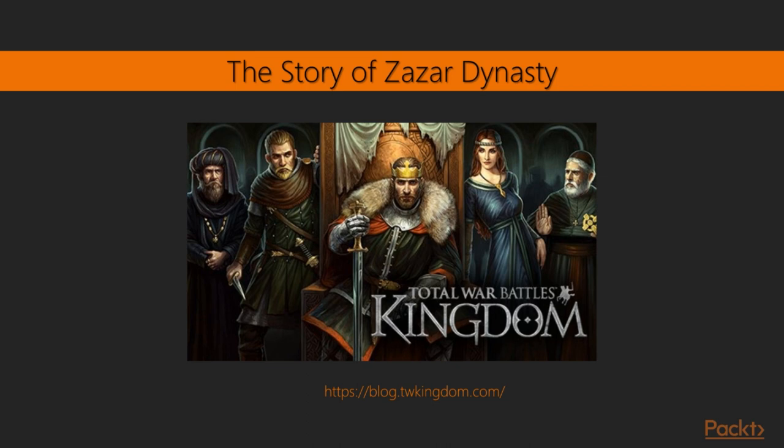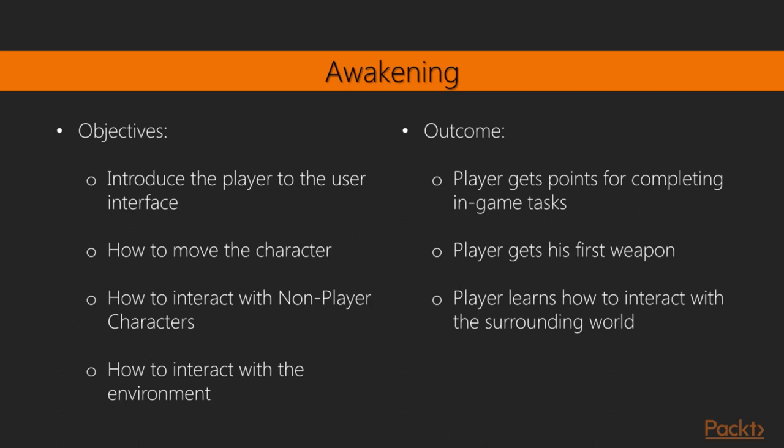Exploration and quests: Now that we have defined our plot for the game, we can start working on developing the story further and breaking it down into different levels. To keep things simple, we will concentrate on basic quests and level design. The important point is to understand the concepts and apply them to your own story. Awakening: The game will start by immersing the player in the environment where our hero has been raised and trained by the elder entrusted by the great King Zazar. The main objectives of this level will be for the player to engage with the environment and learn how to interact with their surroundings.